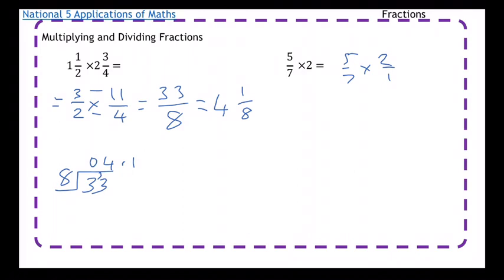But if that was 3, it would be 3 over 1. If it was 5, it would be 5 over 1. If it was 100, it would be 100 over 1. And then just multiply along the top, multiply along the bottom. So 5 times 2 is 10, 7 times 1 is 7.